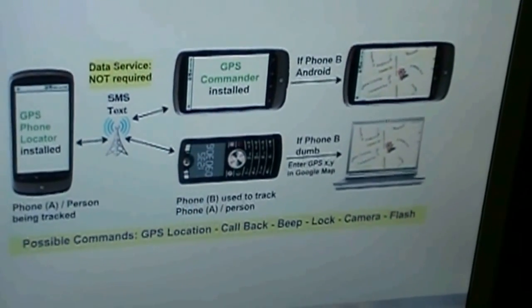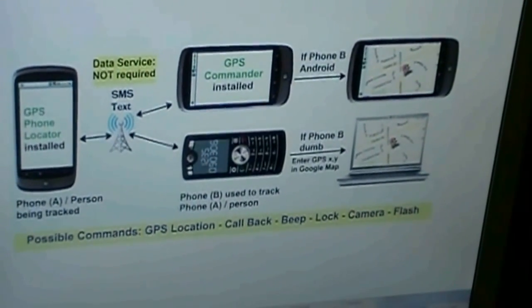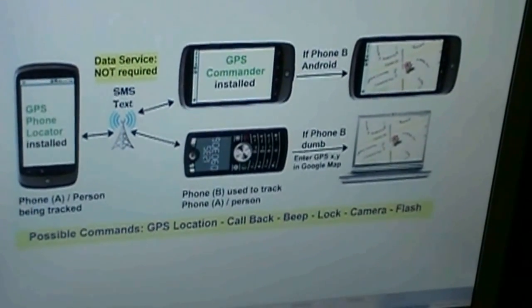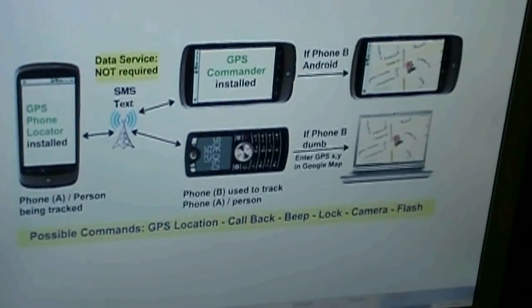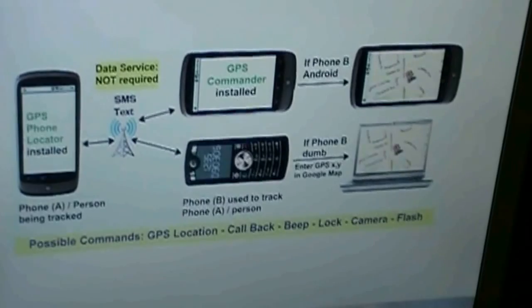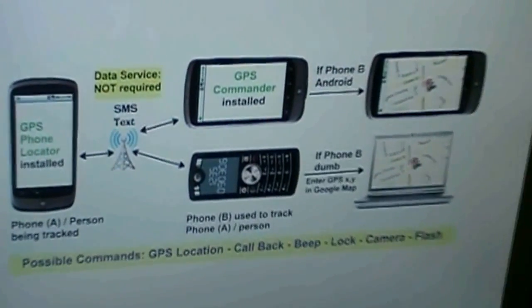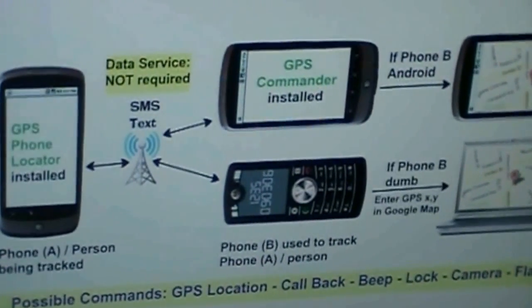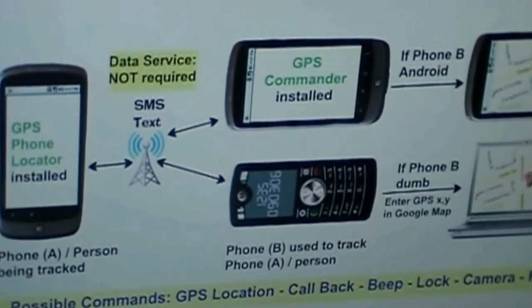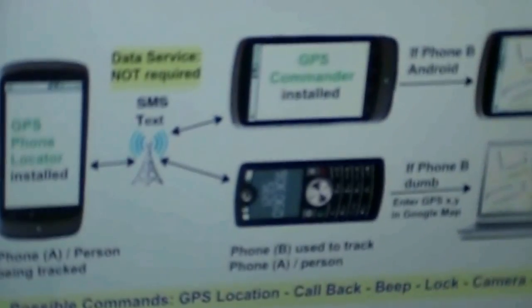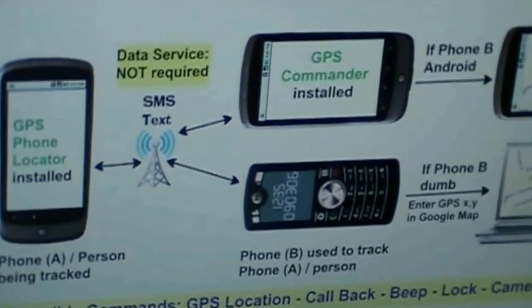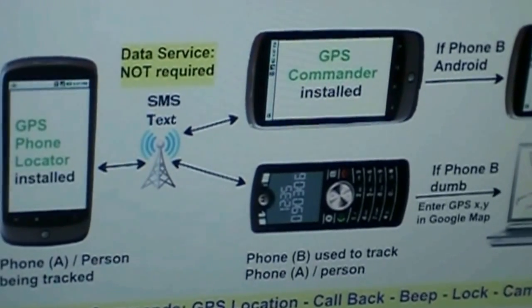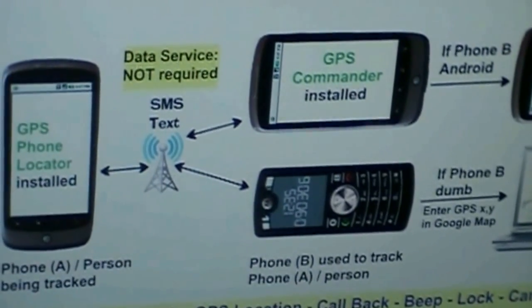There are many reasons why you want to track the location of a phone. You might have lost it, or you want to check if your spouse is on his way home for dinner. In this video, I am going to show you how you can do it on an Android phone with the GPS Phone Locator app.